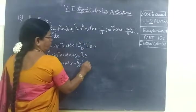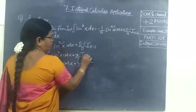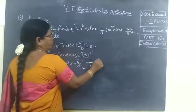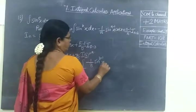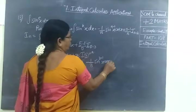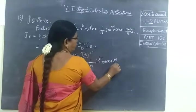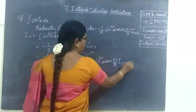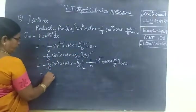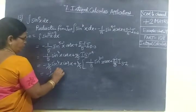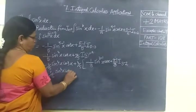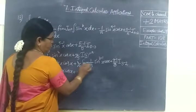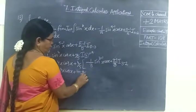Now apply the formula. Minus 1 by, here n equal to 3, 3 sin power 3 minus 1 x cos x plus 3 minus 1 by 3, I_{3-2}. So equal to minus 1 by 5 sin power 4x cos x plus 4 by 5 minus 1 by 3 sin squared x cos x plus 2 by 3 I_1.